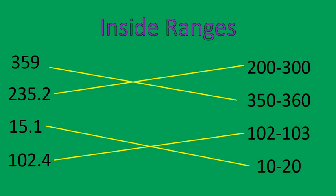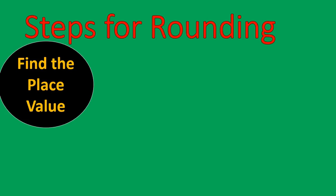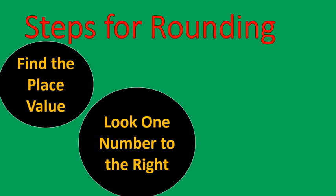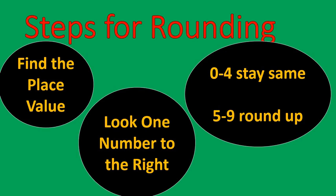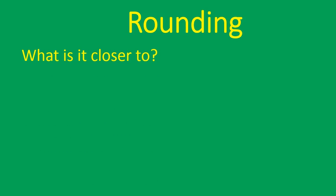Let's talk about the steps for rounding. First, we're going to find the place value we're looking for and look to see where the number fits — where does it fit in between these two things? Then we'll look one number to the right of the place value. If it's zero to four, it stays the same. Five to nine, we round up. Find that place value, look one number to the right, and then check: zero to four, the number stays the same; five to nine, you round up.